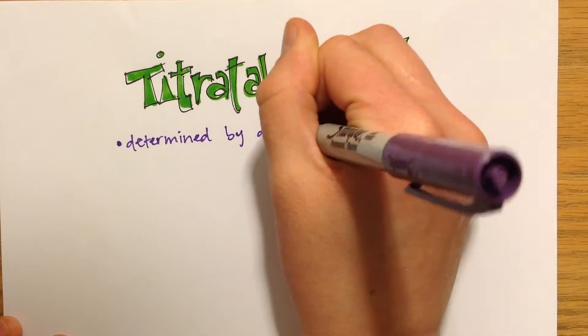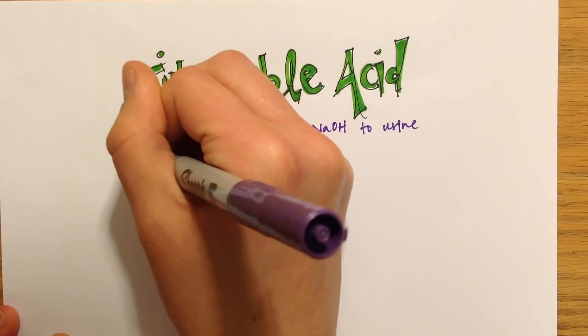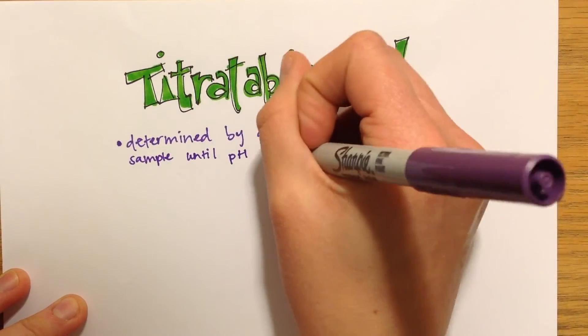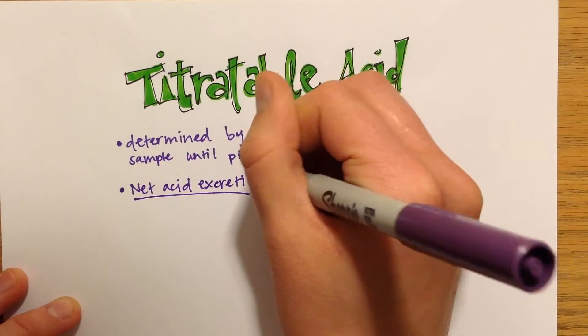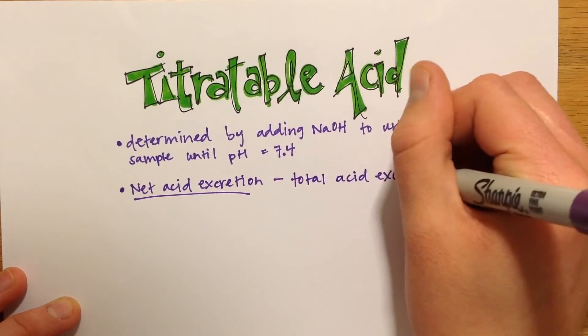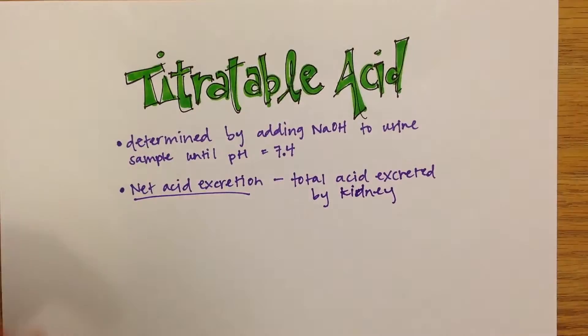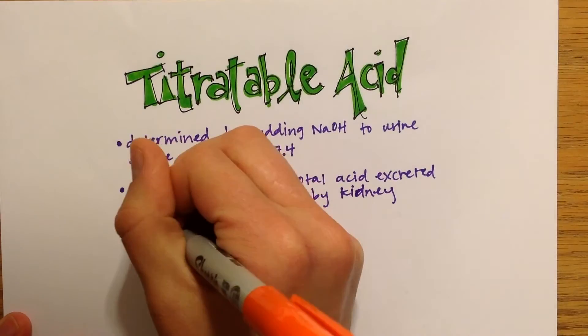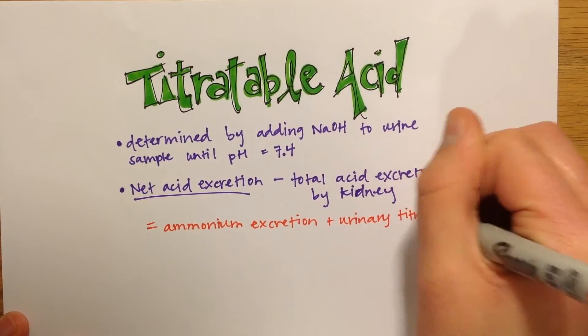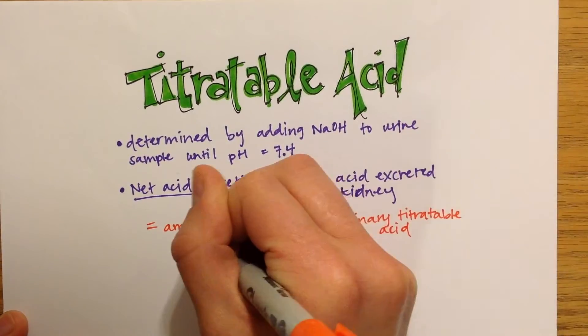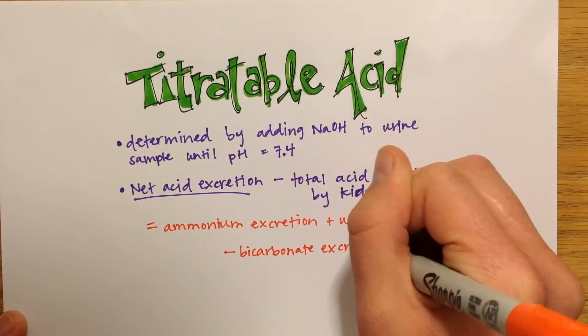Titratable acid is determined by gradually adding NaOH to a urine sample until the pH equals 7.4. The amount of NaOH added is equal to the titratable acid. Net acid excretion is the total acid excreted by the kidney. Net acid excretion equals ammonium excretion plus urinary titratable acid minus bicarbonate excretion.